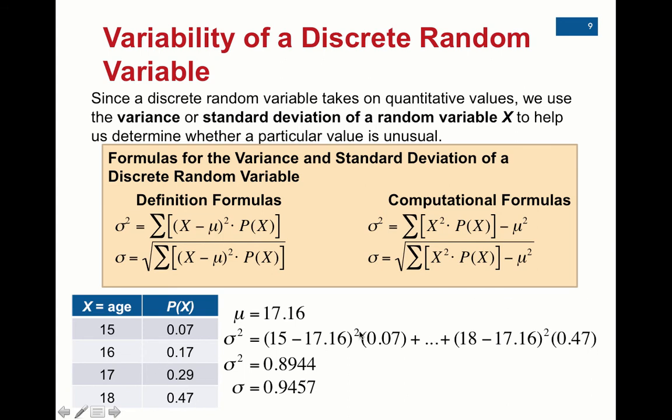So you do that process, the outcome minus the mean squared times its probability for each data value, add them all up, and this is the population variance, 0.8944. To get the standard deviation from the variance, you take the square root. So the square root of 0.8944 is 0.9457. So we'll work on those in class practicing the mean and the standard deviation.